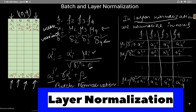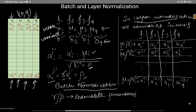In layer normalization, instead of normalizing across features, we calculate the mean and variance for each row. So for each data item, we normalize at the row level. Batch normalization is about features; layer normalization is about each row. We use the same formula and also multiply by gamma and add beta to get the final normalized row values.